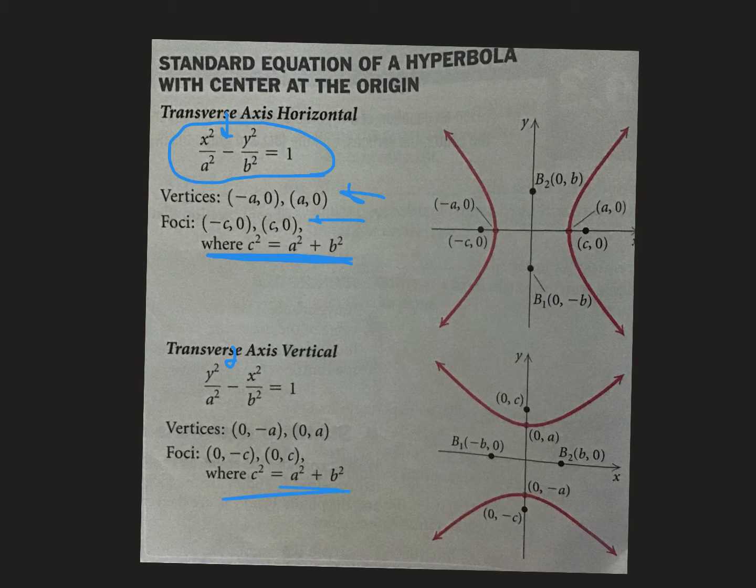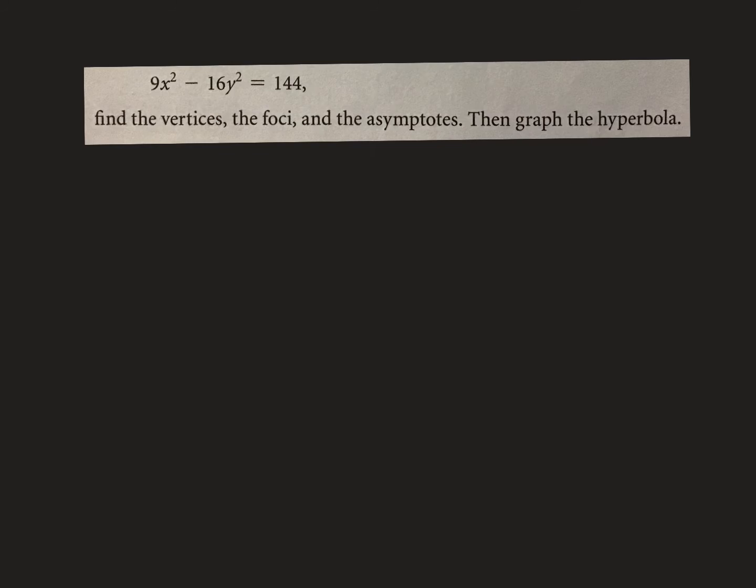One other weird thing: whatever term is positive, if the x is positive or the y is positive, that's the major axis today. Not the one that's bigger, but the one that's positive. The one that's first and positive is going to be the major. So if x is the major one, it's going to open sideways like this. If y is positive, it's going to go up and down just like that.